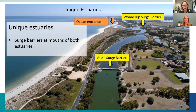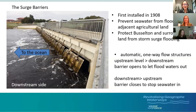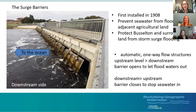The surge barriers were first installed in 1908 by early settlers to largely prevent seawater from flooding adjacent agricultural land. Today they're really important to protect Busselton and surrounding land from storm surge flooding — Busselton would flood under high ocean levels without them. These are relatively simple, one-way flow structures: they let fresh floodwaters out, but when ocean levels rise those gates are pushed closed and seawater can no longer get in.